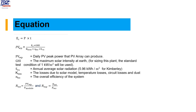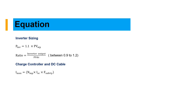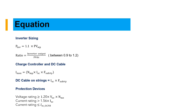We also need to calculate the total number of modules — modules in parallel and modules in series. For inverter sizing, we use 1.1 times the size of our PV array, and the inverter sizing ratio should be between 0.9 and 1.2 to avoid losses. The charge controller and DC cables are sized by the number of modules in parallel times the short circuit current of the module times a safety factor of 1.25. Protective devices require voltage rating and current rating calculations, where NMS is the number of modules in series.